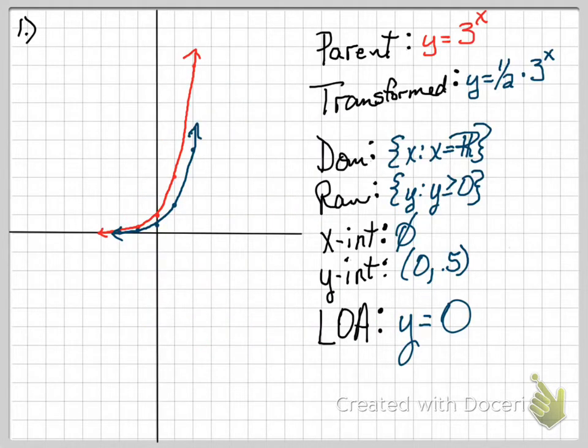Alright, number one. It asked you to graph the parent function and the transformed function. It gave you the transformed function, and you had to figure out what the parent function was. The transformed function is y equals 1 half times 3 to the x. That gives a parent function of 3 to the x.